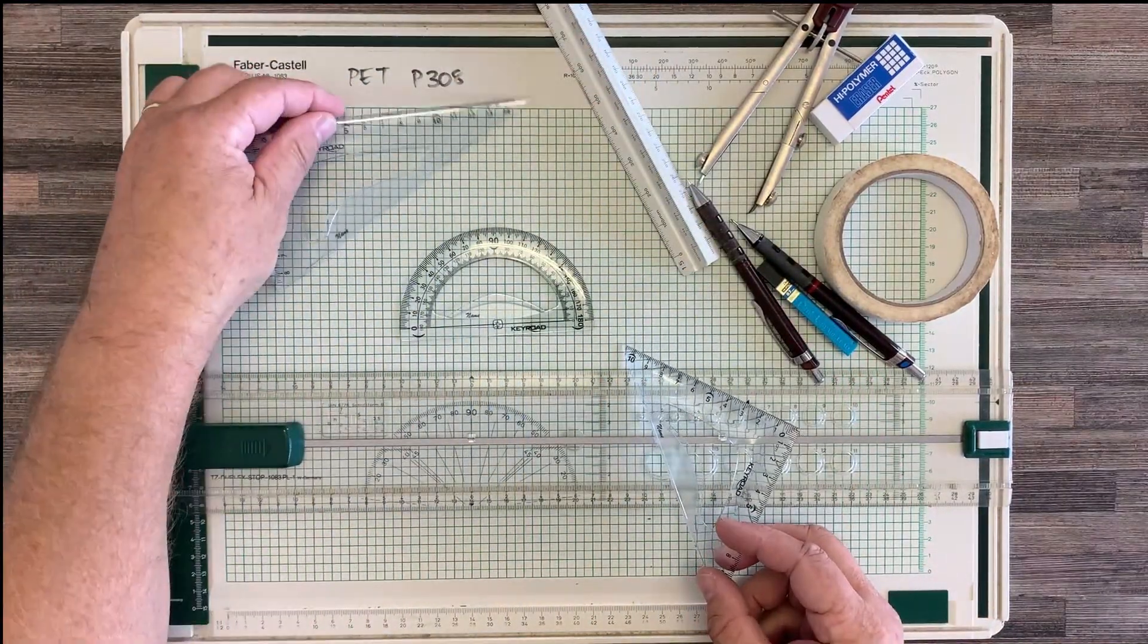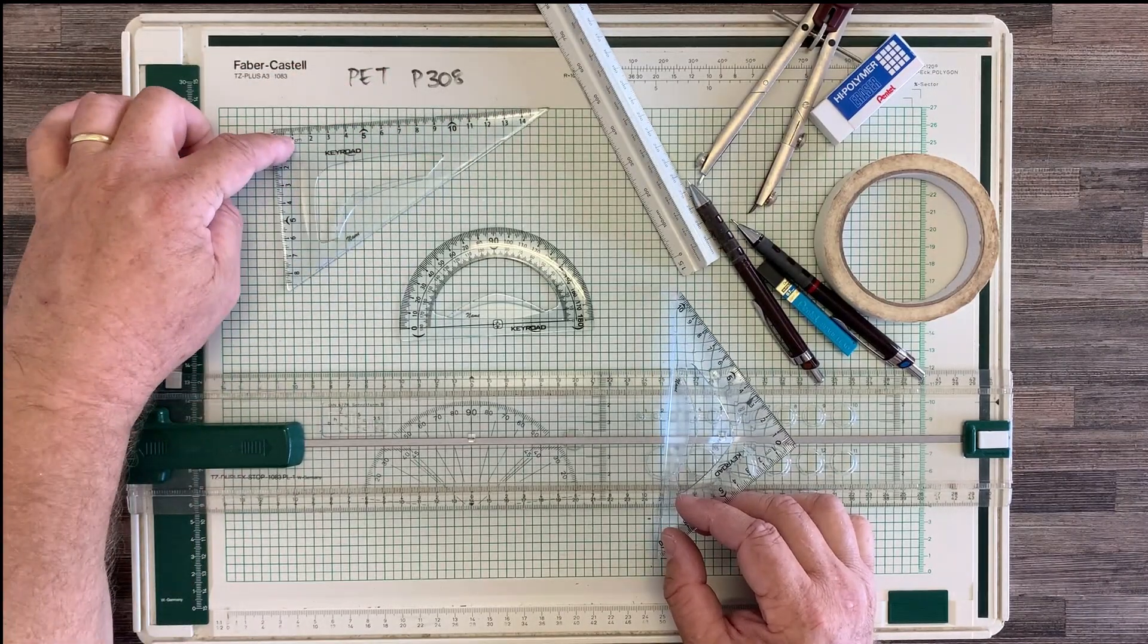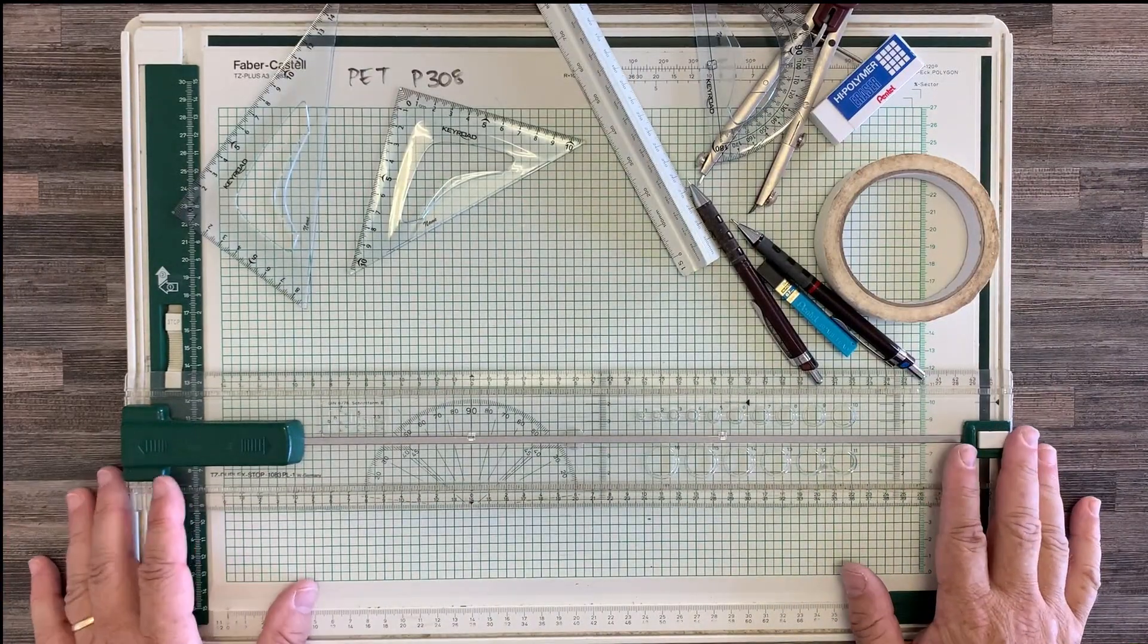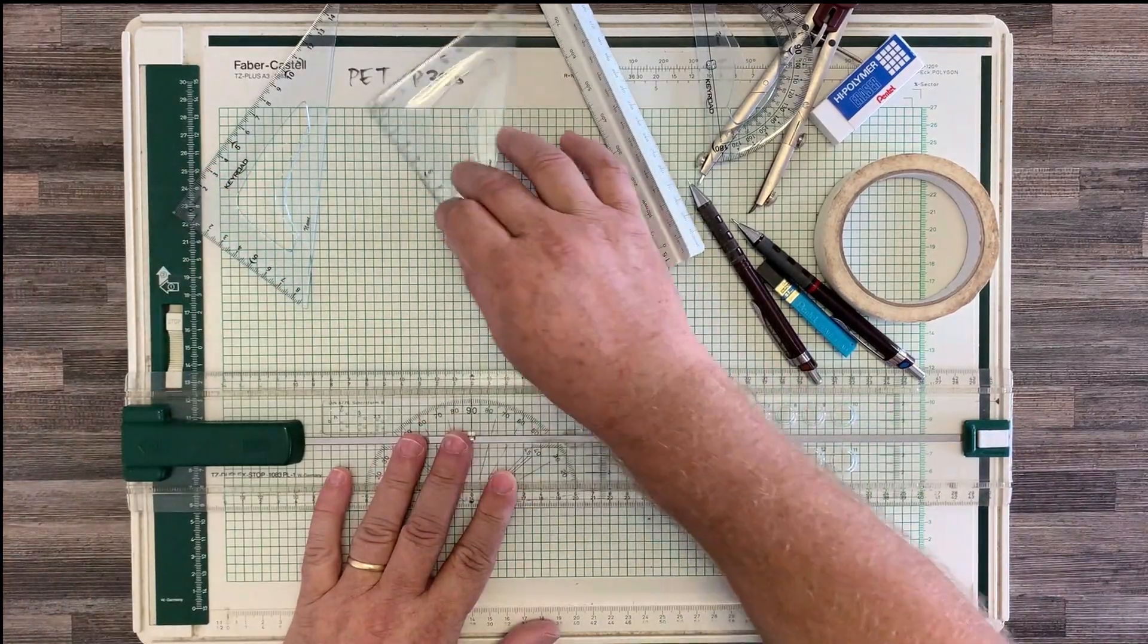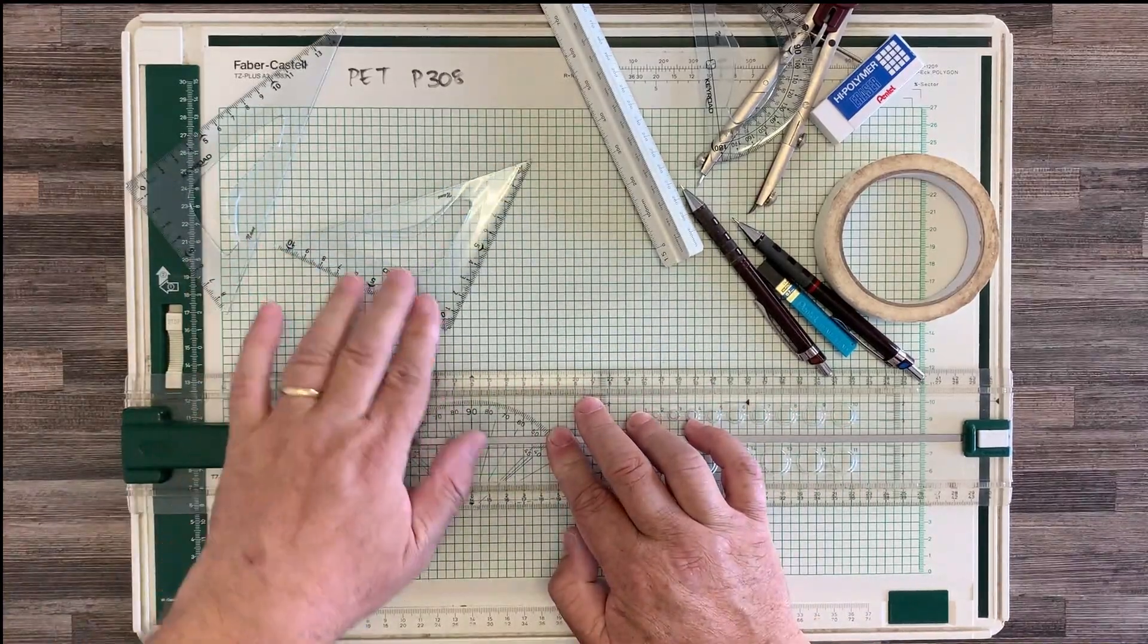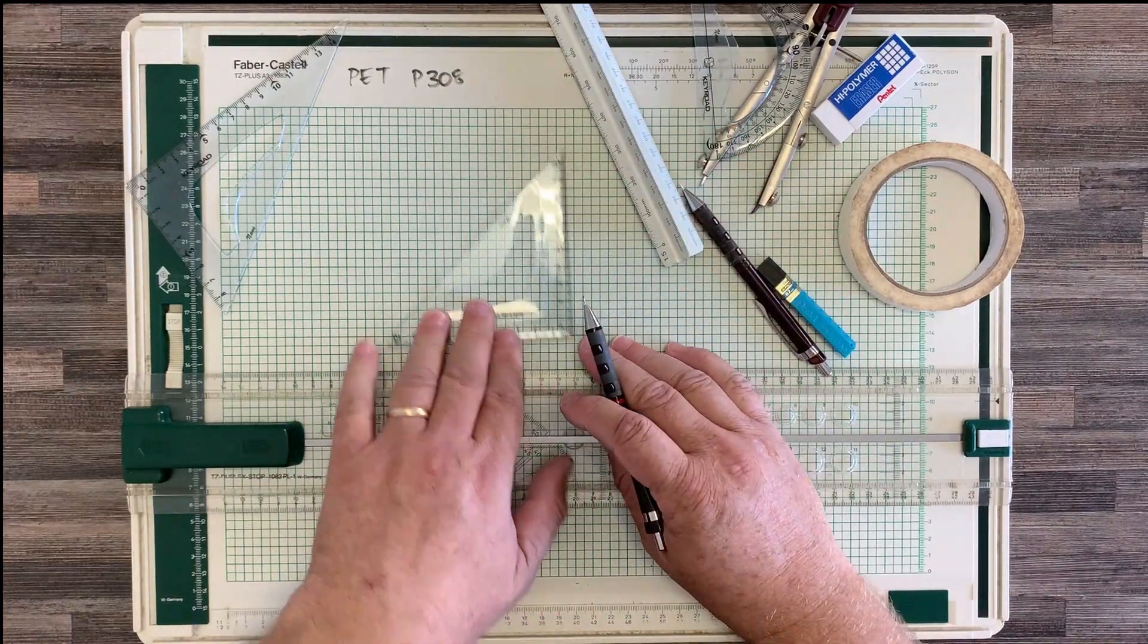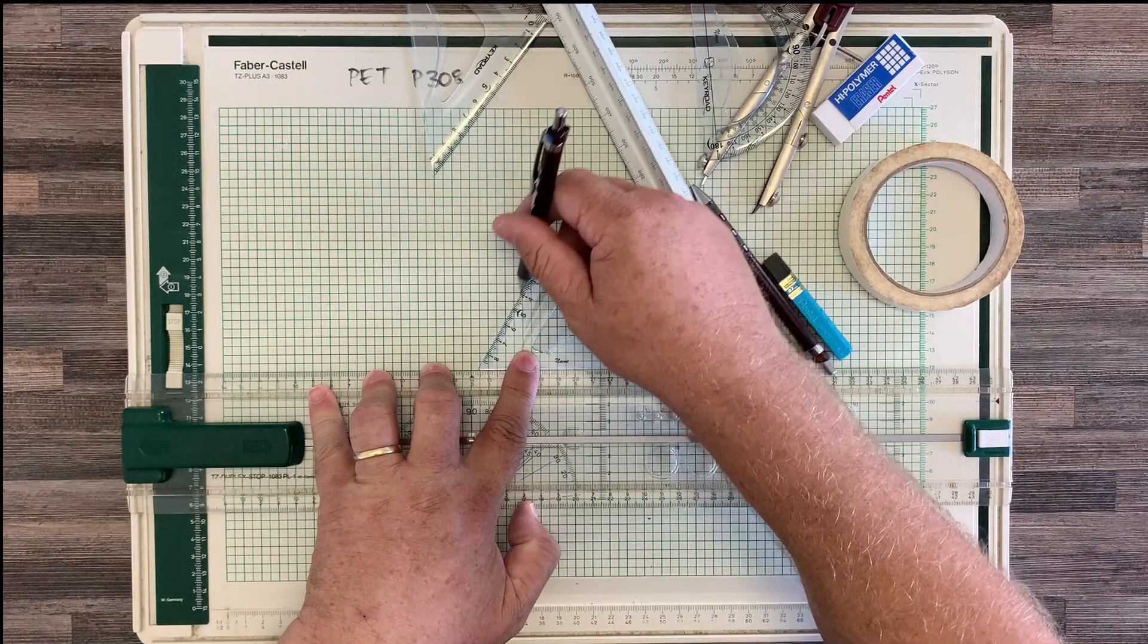As you can see here, we have a 30 and a 60 degree set square, and here's a 45 degree set square. The way we use this is on our horizontal ruler once we've locked it into position. We take our set square and we put it on the ruler and we slide it back and forth. We take our pencil and we can draw lines vertically or 45 degree lines, we can draw 30 degree lines or 60 degree lines like that.